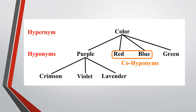In this example, the predicate 'color' is the hypernym, which has four hyponyms: purple, red, blue, and green. Notice that the hyponym 'purple' could itself be a hypernym for other predicates like crimson, violet, and lavender. Purple, red, blue, and green can also be called co-hyponyms.